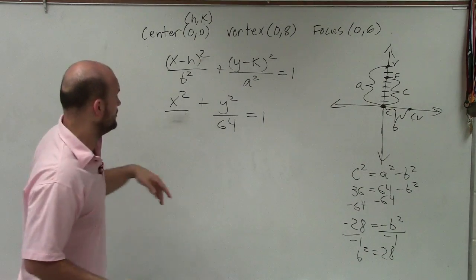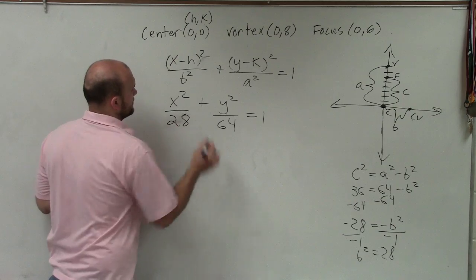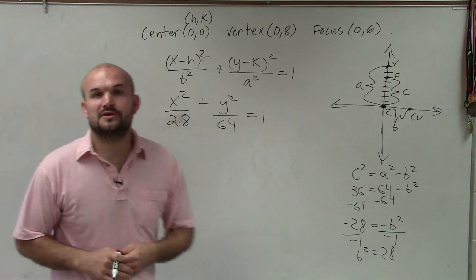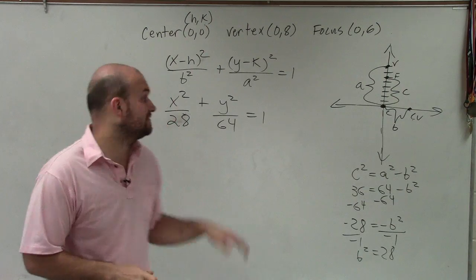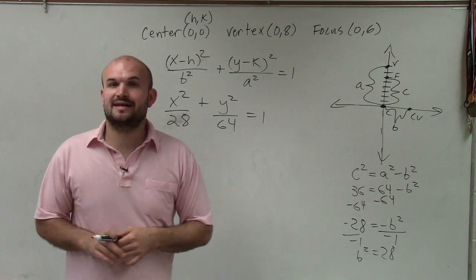So therefore, now I know what b² is, which is 28. And there you go. So there you go, ladies and gentlemen. That is how you write the equation of an ellipse, given the center, the vertex, and the focus. Thanks.